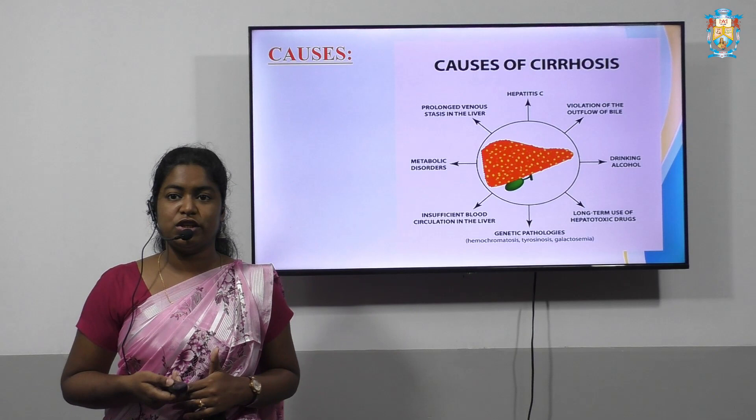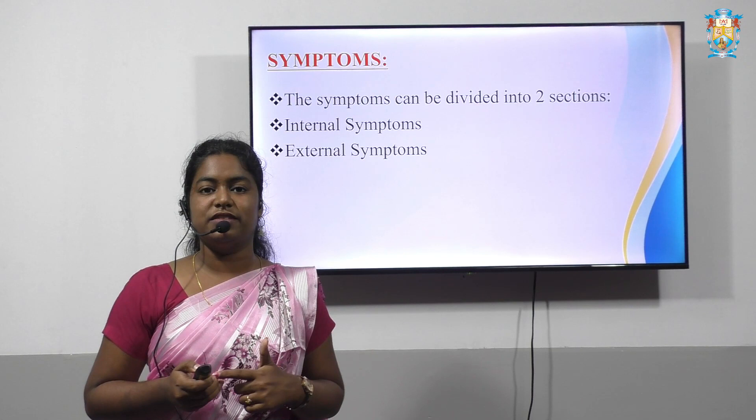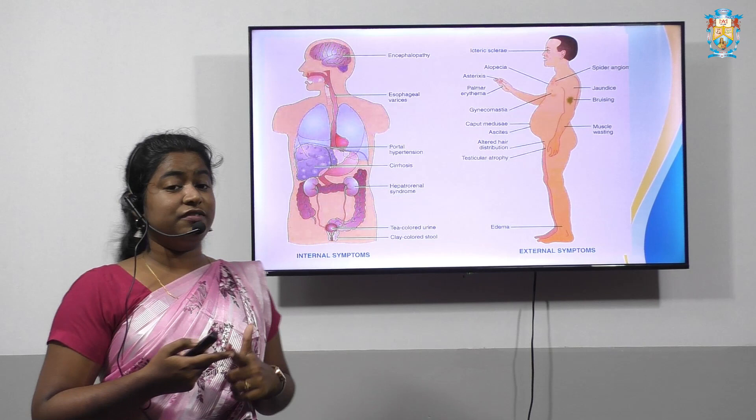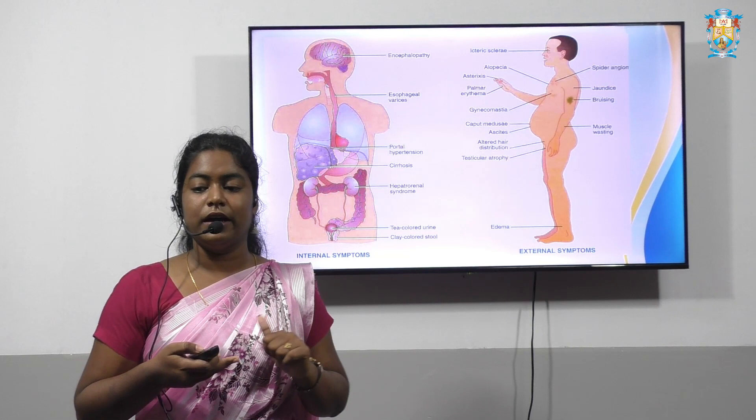Symptoms: once these causes are present, the symptoms include two types — internal symptoms as well as external symptoms. This picture clearly depicts the internal and external symptoms. The internal symptoms involve encephalopathy, portal hypertension, cirrhosis, and change in the colour of urine as well as stool. When it comes to external symptoms, it involves ascites, edema, and so on.